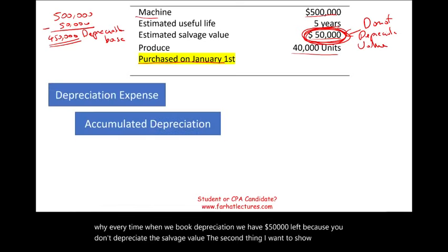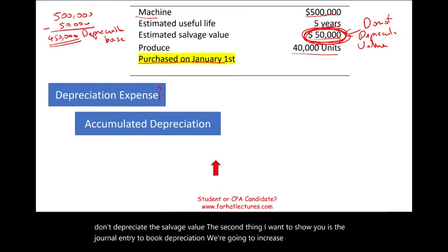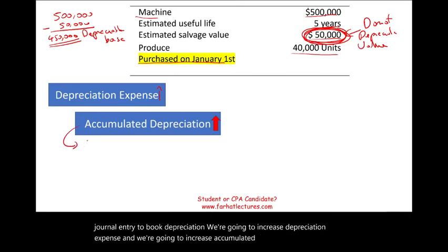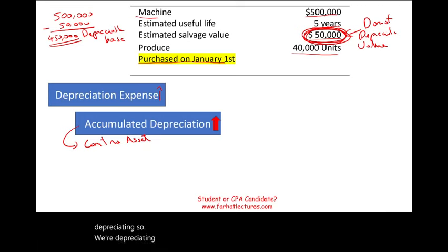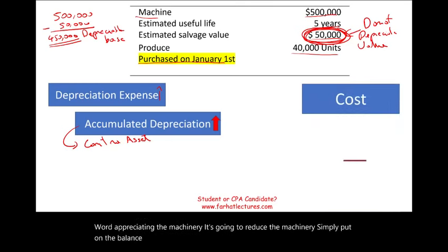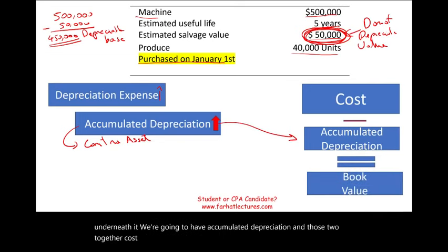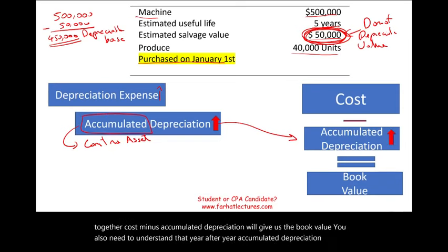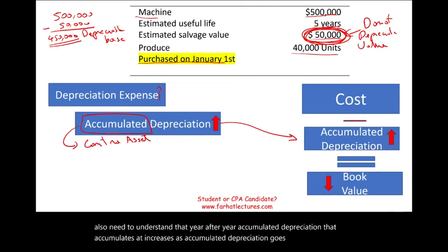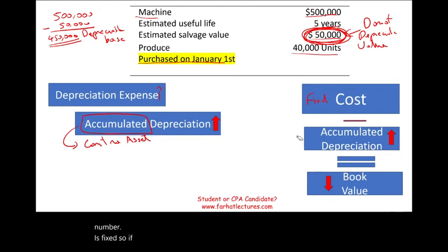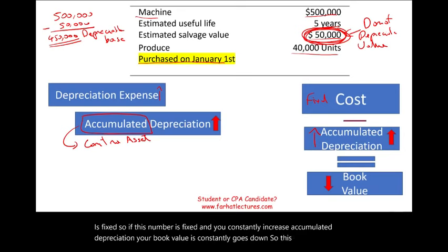The journal entry to book depreciation: we debit depreciation expense and credit accumulated depreciation. Accumulated depreciation is a contra-asset account — specifically a contra-asset to the asset being depreciated. On the balance sheet, we'll have the cost of the asset, and right underneath it, accumulated depreciation. Cost minus accumulated depreciation gives us the book value. Year after year, accumulated depreciation accumulates and increases, so as accumulated depreciation goes up, the book value goes down. The cost is fixed, so constantly increasing accumulated depreciation constantly reduces book value. This concept applies to all depreciation methods.